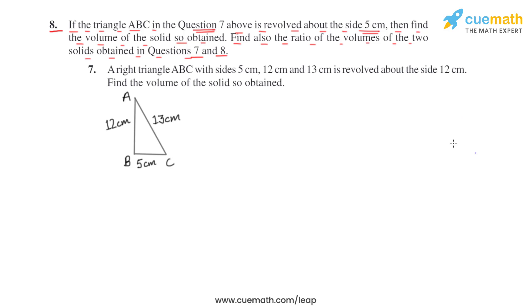In the seventh question, it was given that a right triangle ABC with sides 5 centimeters, 12 centimeters, and 13 centimeters is revolved about 12 centimeters. Then find the volume of the solid so obtained.